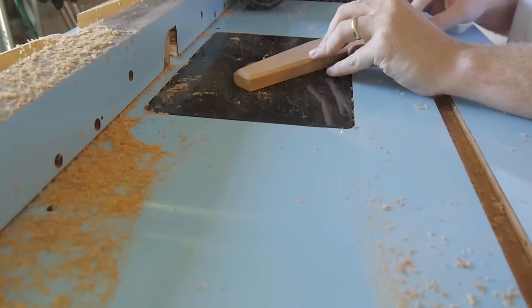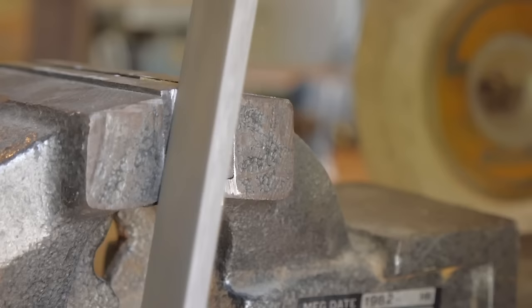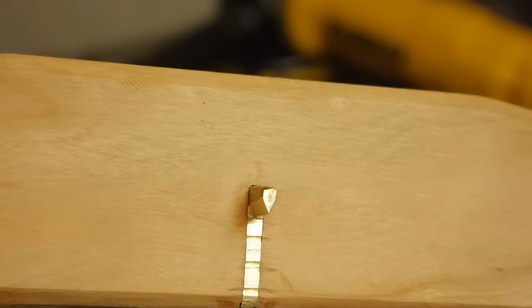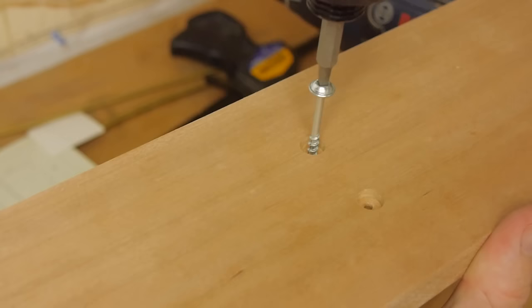The uprights were cut on the bandsaw using a printed template I drew on the computer. I sanded all the parts, then put a chamfer on the edges using a router table. For the knife edge pivot, I used a piece of brass bar filed to a semi-sharp edge on two sides. This was glued into a kerf in the center of the balance beam. I also glued two small pieces of brass on the insides of the uprights for the knife edge to pivot on.